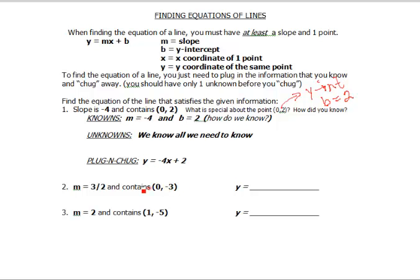So let's try again. Slope is positive 3 halves. It contains the point 0, negative 3. This is the y-intercept. So we just have to say y equals 3 halves times x minus 3 because it's negative 3 for b.